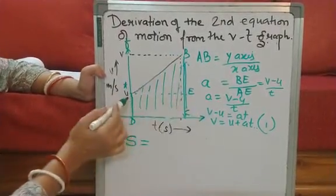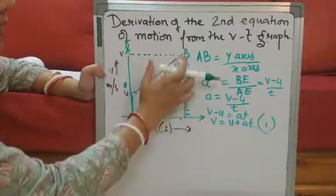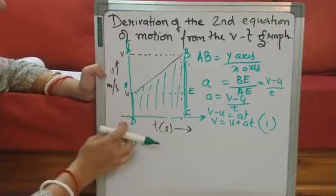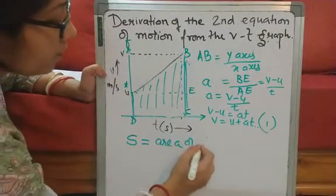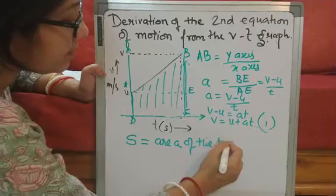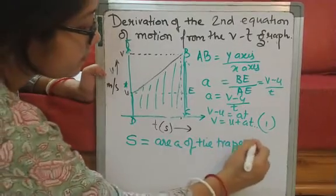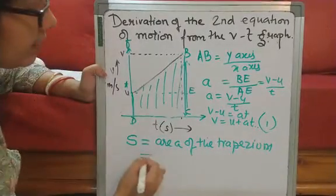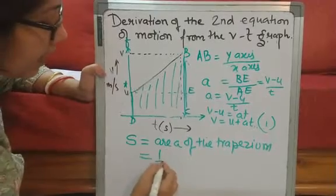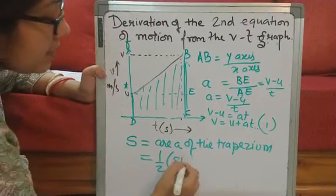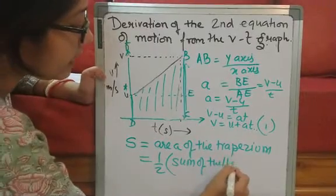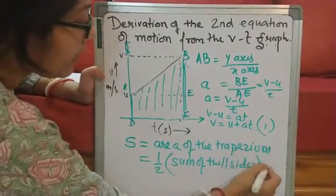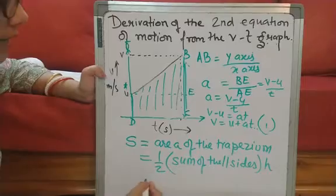Now, a trapezium has two parallel sides. AD and BC. So I will write area of the trapezium, wherein it is the half into sum of parallel sides, sum of the parallel sides into height.